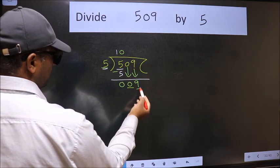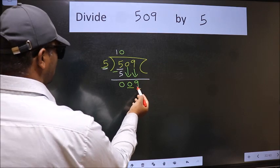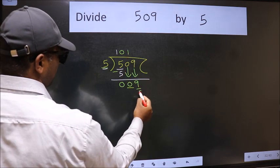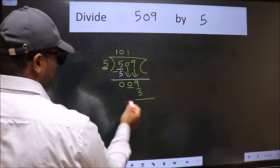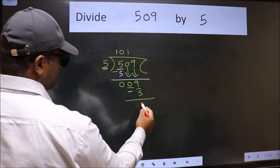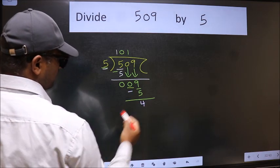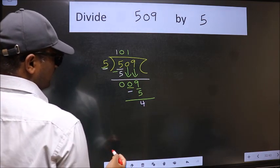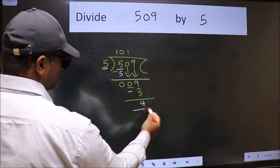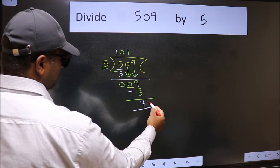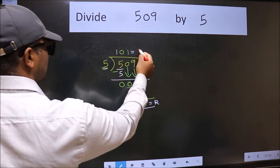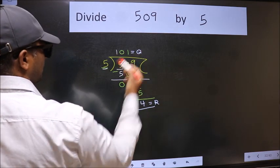Now 9. A number close to 9 in the 5 table is 5 once 5. Now we should subtract — we get 4. No more numbers to bring down, so we stop here. This is our remainder and this is our quotient.